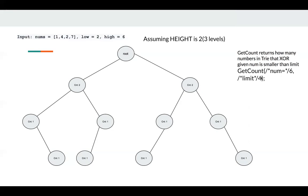We need to know how many numbers in our Trie such that XOR 6 produces a number which is smaller than 4. We need to know how many numbers satisfy this condition. Let's go through the example.